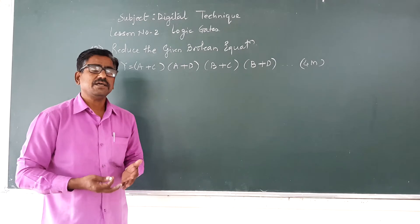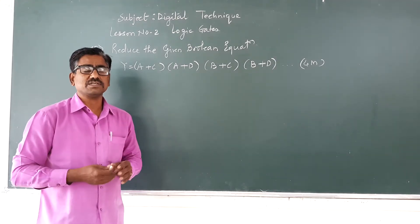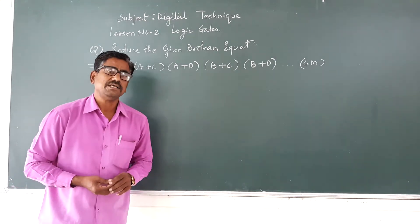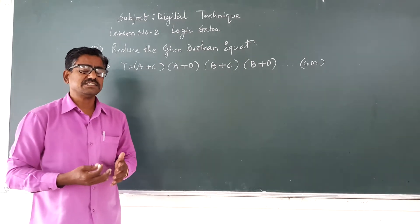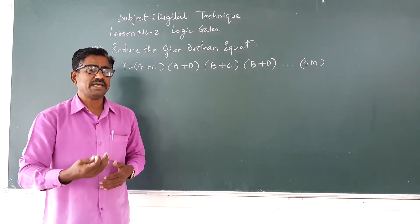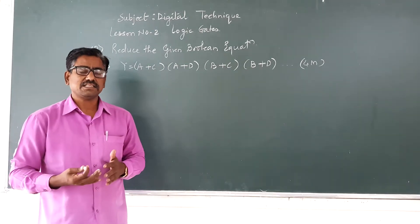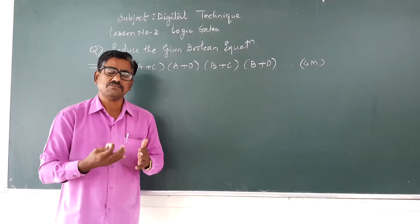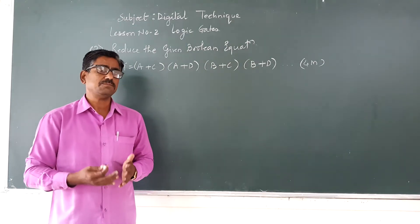In the second phase, we have gone through all the De Morgan's theorems - De Morgan's Theorem 1, De Morgan's Theorem 2. In the De Morgan's theorem, we have stated the statement, afterwards the block diagram, and then we have verified the truth table. These three things we have done for De Morgan's Theorem 1 as well as for De Morgan's Theorem 2.